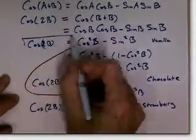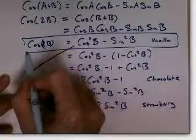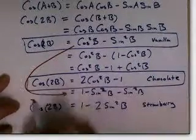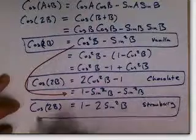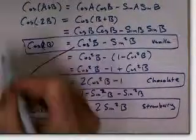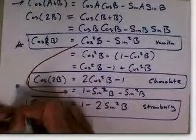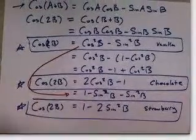So there you go. Vanilla. Chocolate. And strawberry. The double angle formula for cosine. It comes out of the cosine of a sum, and you've got three versions of the double angle formula for cosine.